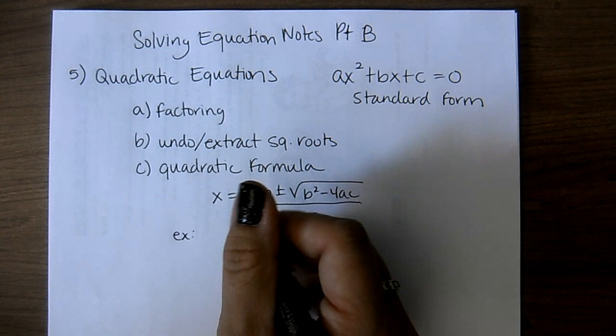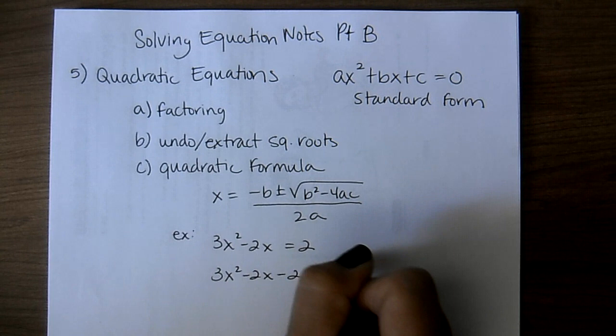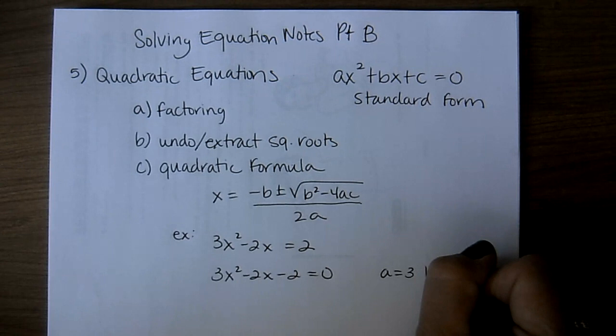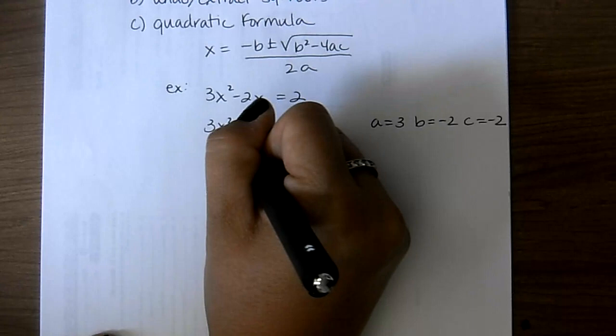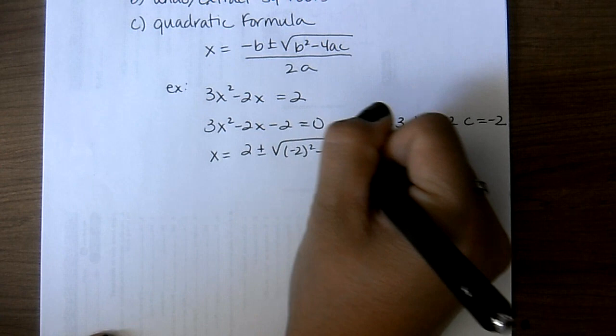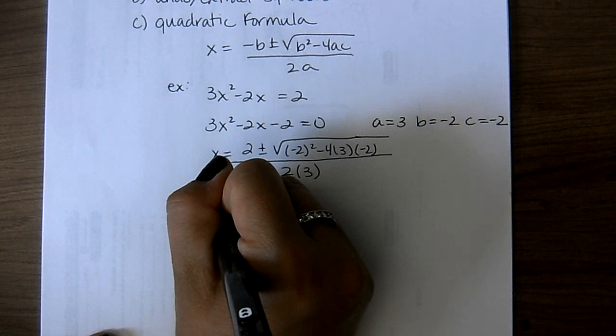Here's a quick example using the quadratic formula. If you had 3x squared minus 2x equals 2, you bring everything to one side and define a, b, and c. So a is 3, b is negative 2, and c is negative 2. Then you substitute into the formula: x equals negative b, so 2 plus or minus the square root of b squared minus 4ac all over 2 times a, so 2 times 3.